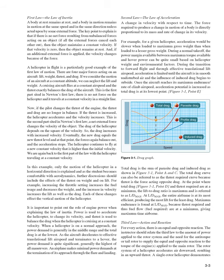In this example, only horizontal motion is explained. As the student becomes comfortable with aerodynamics, further discussions should include the effects of thrust on weight and lift. For example, increasing the throttle setting increases fuel usage and decreases weight, and the increase in velocity increases lift as well as drag. It is important to point out the role of engine power when explaining the law of inertia. Power is used to accelerate the helicopter and change its velocity, while thrust is used to balance the drag when the helicopter is cruising at a constant velocity.